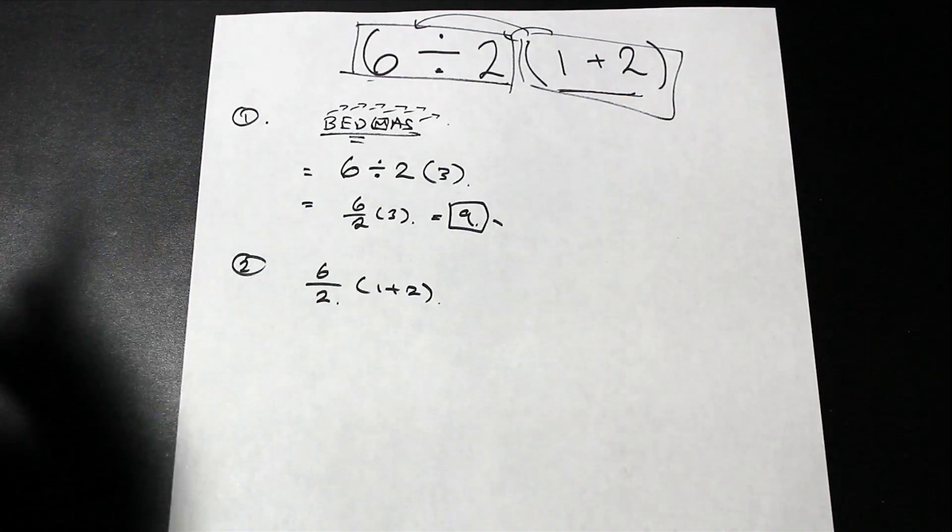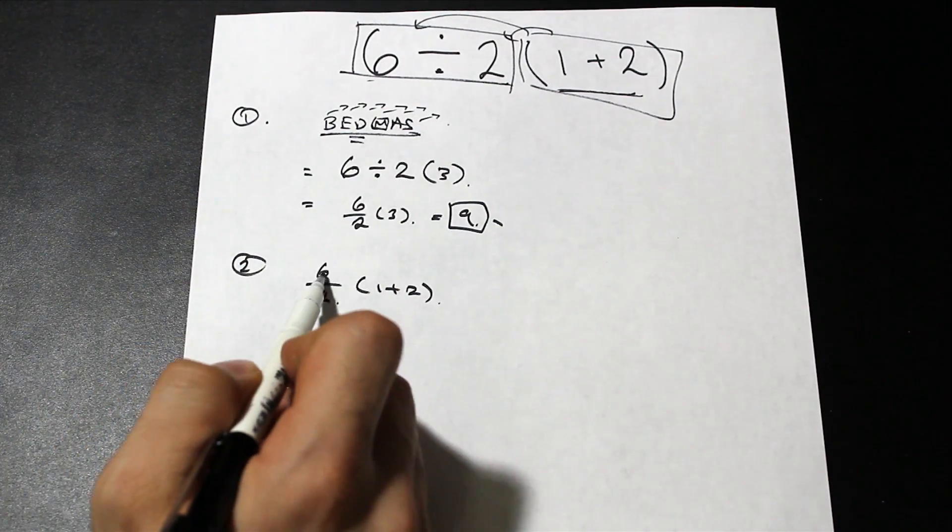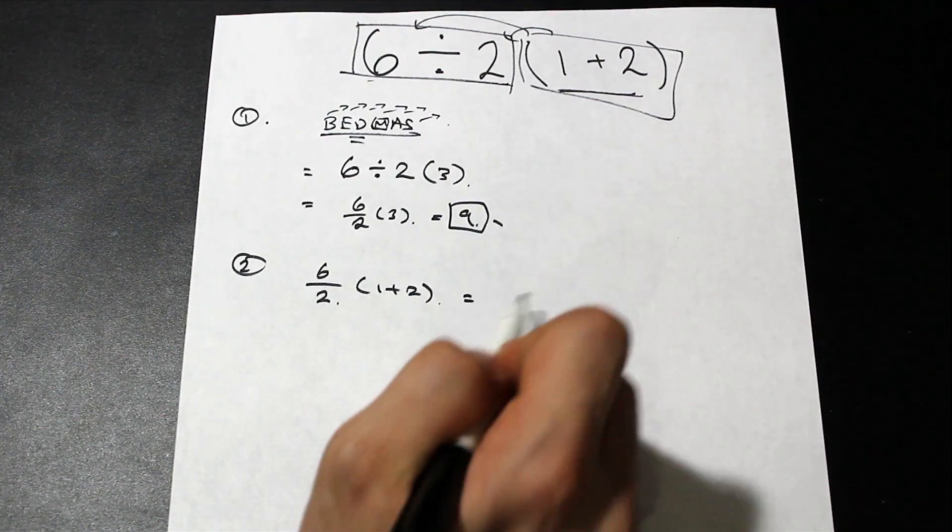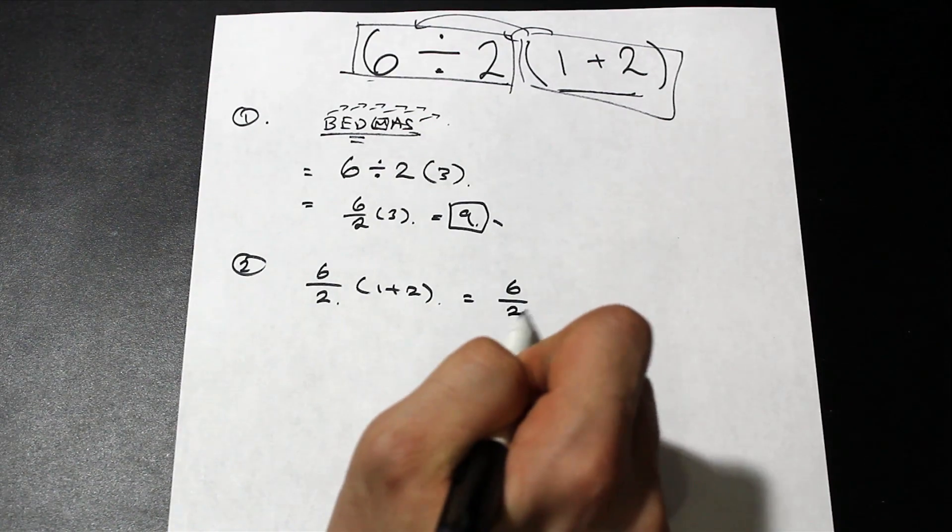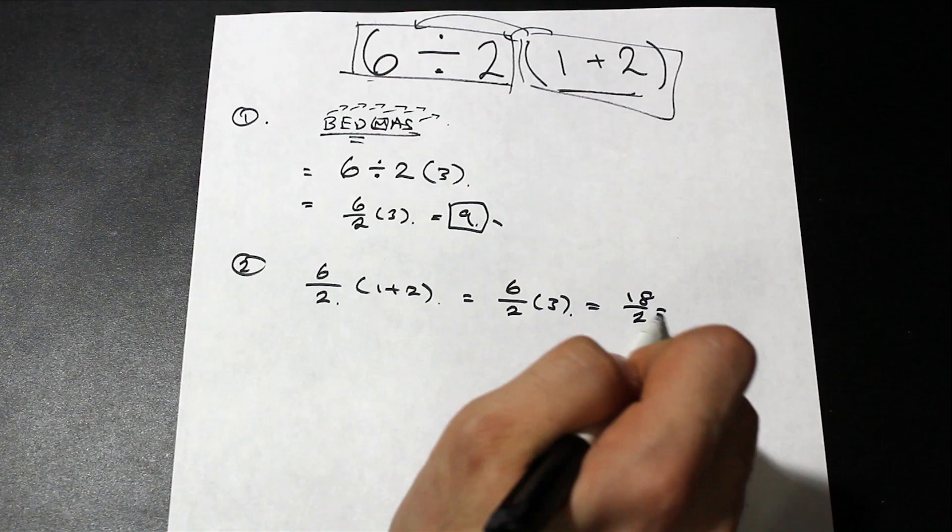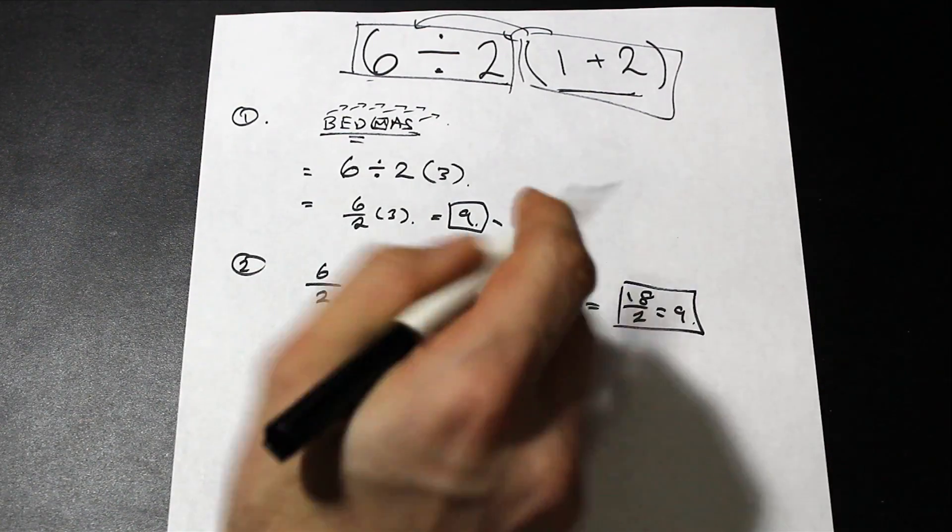We could also rewrite this question like this, and that is actually how Wolfram Alpha did it. They wrote it as six divided by two times one plus two. We can go ahead and evaluate the brackets and we get the same thing: 18 divided by two, which is also nine.